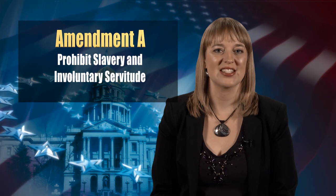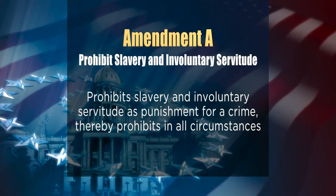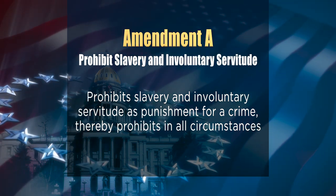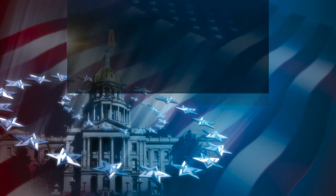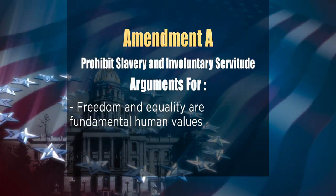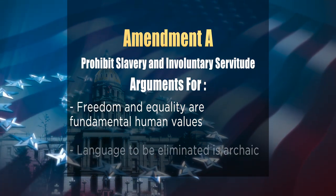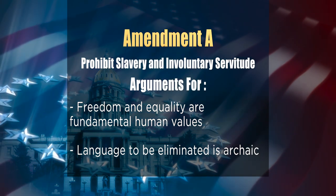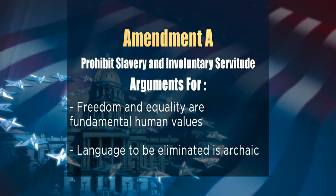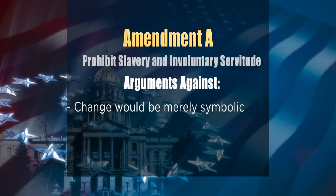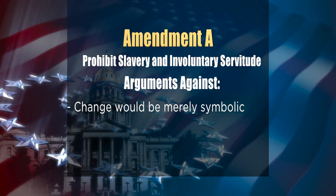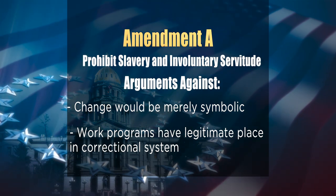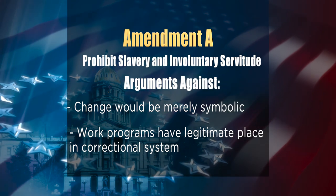The final statewide measure referred by state legislators is Referred Question A. This measure asks if there should be an amendment to the Colorado Constitution that prohibits slavery and involuntary servitude as punishment for a crime, thereby prohibiting it in all circumstances. Proponents say freedom and equality are fundamental human values which should be reflected in the Colorado Constitution, and that the archaic language written in the 19th century should be removed to help Colorado heal racial divides. Those against say this change would be merely symbolic since slavery is already illegal in Colorado, and it may result in legal challenges to current offender work programs.